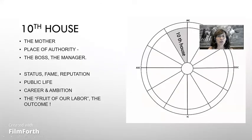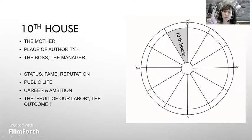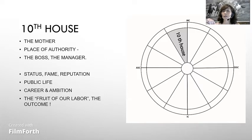Tenth house: the mother, place of authority, the boss, the manager, statute, fame, reputation, public life, career and ambition, the fruit of our labor, the outcome. The tenth house starts with the MC. The sun culminates at this point. After this point, the sun starts to decrease gradually. If we apply this theme to our lives, it symbolizes the highest point we can reach in life within our own limits. It's our MC. The planet that conjuncts the MC will definitely be noticed by society, for better or worse, and we have to deal with this image. It shows the contribution we make to society with the personality we have developed and tested. It's our outcome.